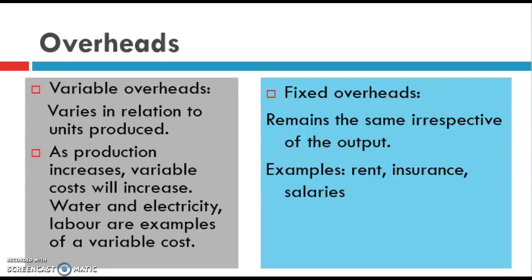We're going to categorize these costs. The first ones we're going to look at are what we call overhead costs. The first is the variable overhead. The word variable means it varies — it changes the whole time. So variable costs change according to the number of product units that are being produced. The more products produced, the higher the total variable costs.